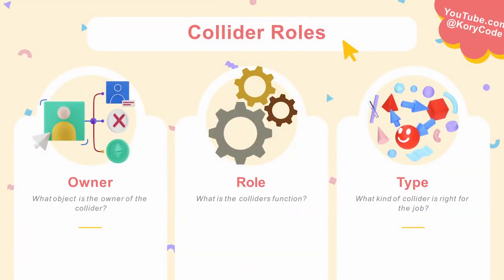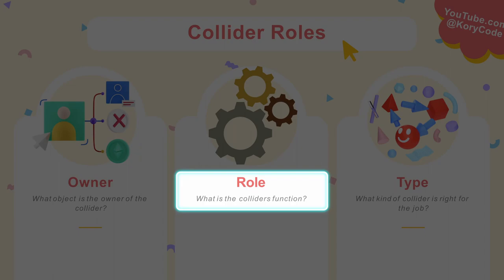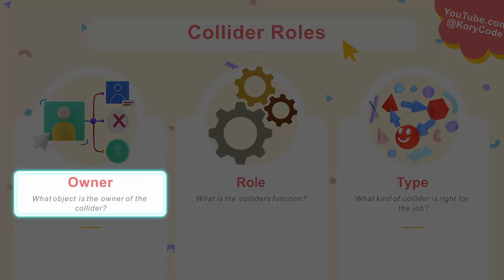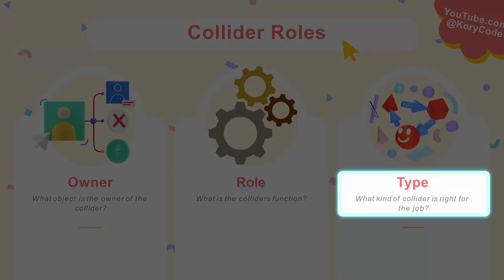I break colliders into 3 different aspects. I define a collider firstly by its role. I want to answer what its function is and how it is related to other colliders. While a role has an owner object, that should not define its function — the role and the owner object will demand a type, but not the other way around.